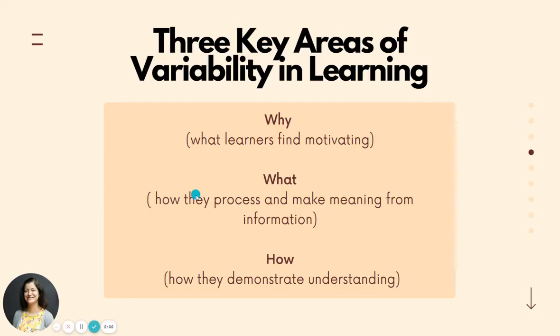The three key areas of variability are: the why — how do we engage our students and get them motivated in what they're learning; the what — how do they process and make meaning from the information; and the how — how do they demonstrate understanding.